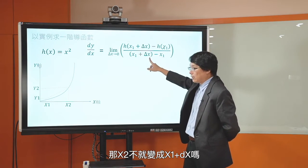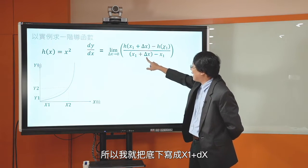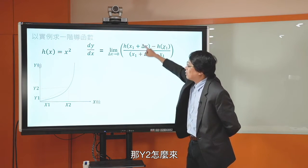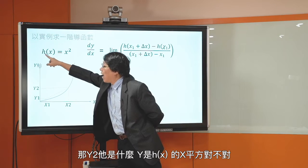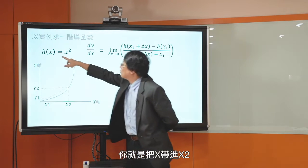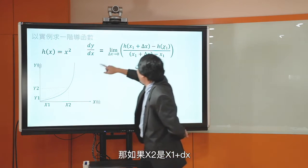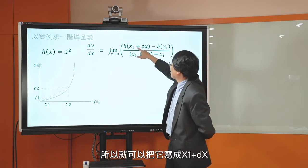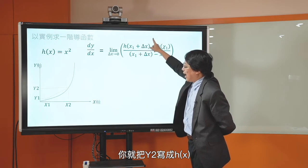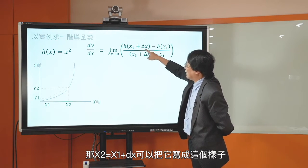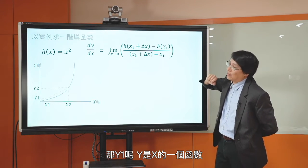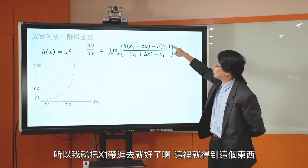通常我们习惯把X2跟X1的差距写成DX，所以X2就变成了X1加DX。底下分母写成X1加DX减掉X1。分子呢，Y是H of X等于X平方，Y2就是把X2带进去，X2是X1加上DX，所以Y2写成H(X1+DX)。减掉Y1就是H(X1)，把X1带进去就好了。